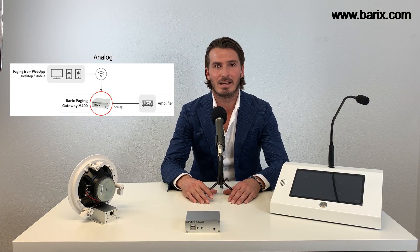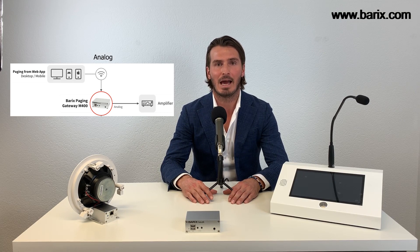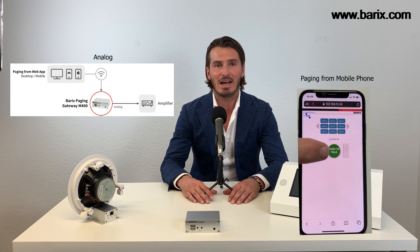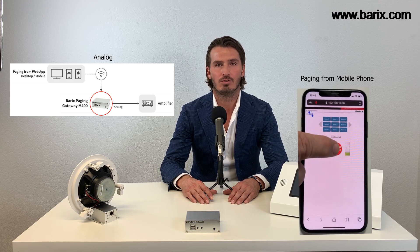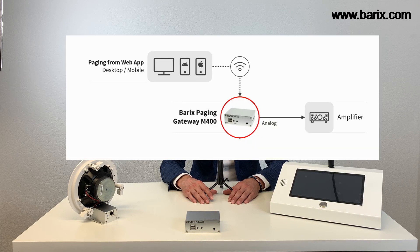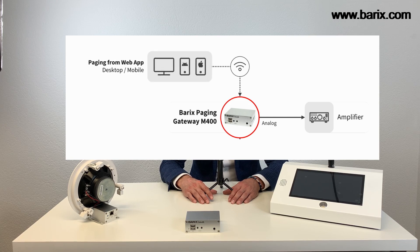Let's first see how the paging gateway provides mobile phone input into an existing analog paging system. I am using my mobile phone to make an announcement. A significant advantage of the Barix paging gateway solution is that users don't need to install any app on their phone. They also don't need to register with a SIP server. All they need is a modern browser on the device. They drop a shortcut button on the phone screen and can page with a simple click.